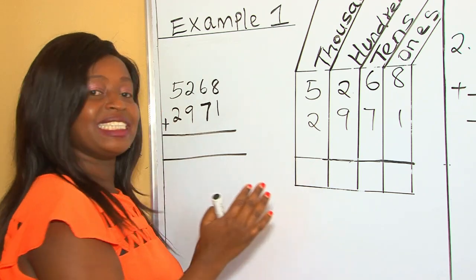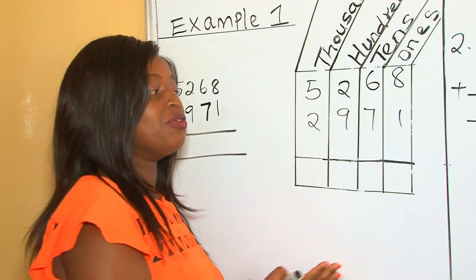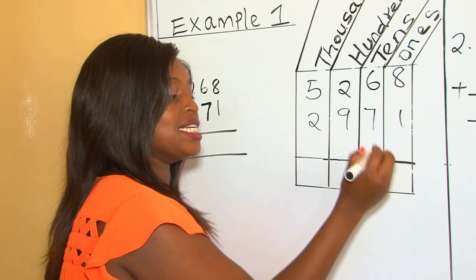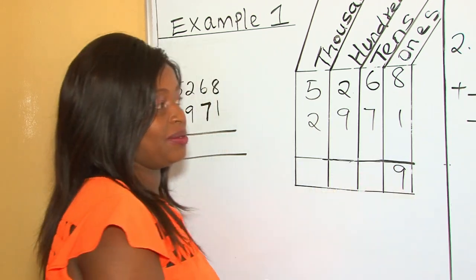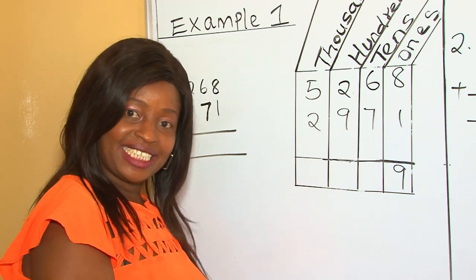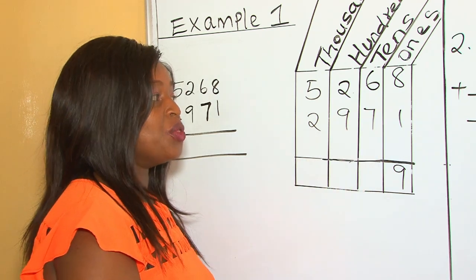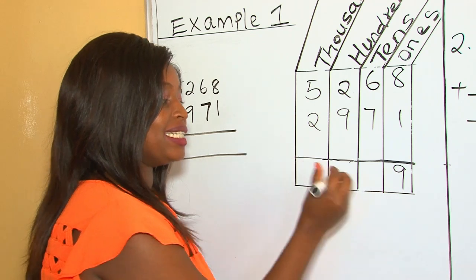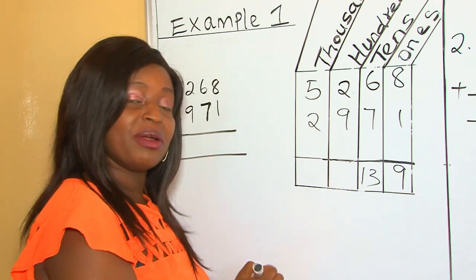So now let's start our addition and we're going to begin it from the ones side. 8 plus 1, that is 9 ones. 6 plus 7, that is 13. Now with 13, we can't come and write 13 here. That will be wrong.